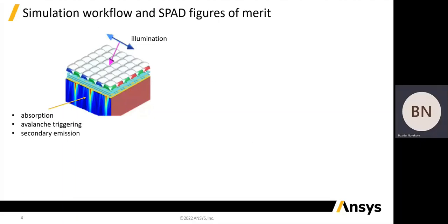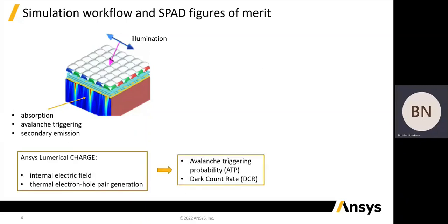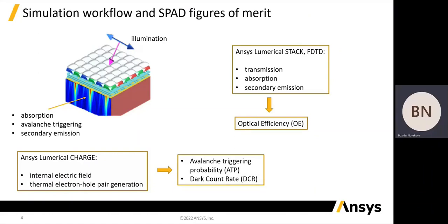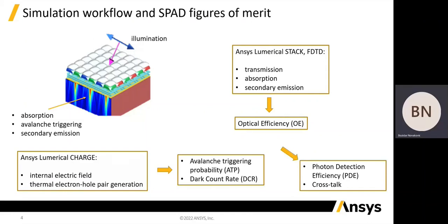Upon illumination, each pixel in a SPAD array undergoes light absorption and carrier generation, followed by a certain avalanche triggering probability. If an avalanche is triggered, this will further cause secondary photon emission. From the electrical side, we can use the ANSYS numerical charge solver to simulate the internal electric field and dark carrier generation. Given these quantities, we can calculate the average triggering probability (ATP) and dark count rate (DCR). For the optical side, we can use ANSYS numerical STAC and FDTD to calculate the transmission, absorption, and secondary emission, as well as the optical efficiency. Combining the electrical and optical simulations, we can calculate the photon production efficiency and various types of crosstalk.